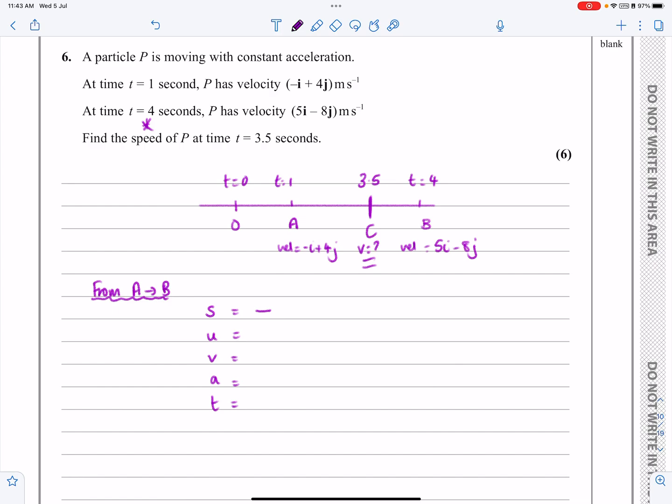U, the initial velocity at t equals one, is minus i plus 4j. For the journey AB, V is the final velocity, 5i minus 8j. A is what I'm trying to work out, so that's my variable. T is three seconds, the time from one to four seconds. I've got four of them. Which formula connects V, U, A, and T? V equals U plus AT.